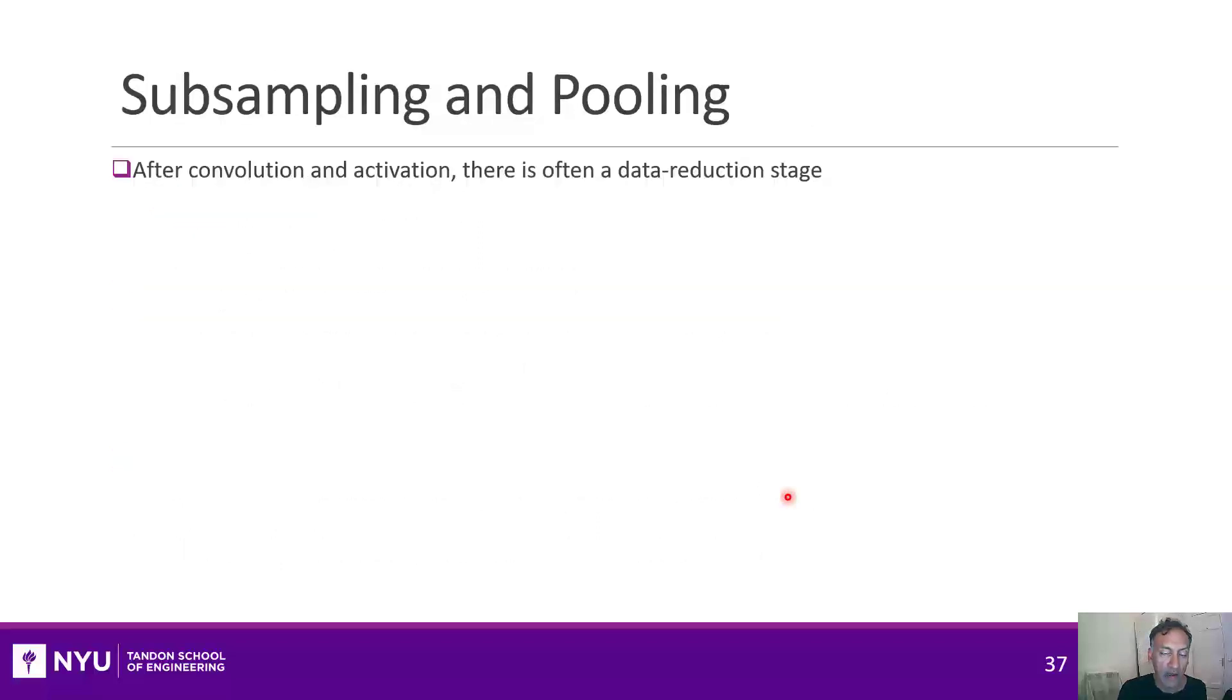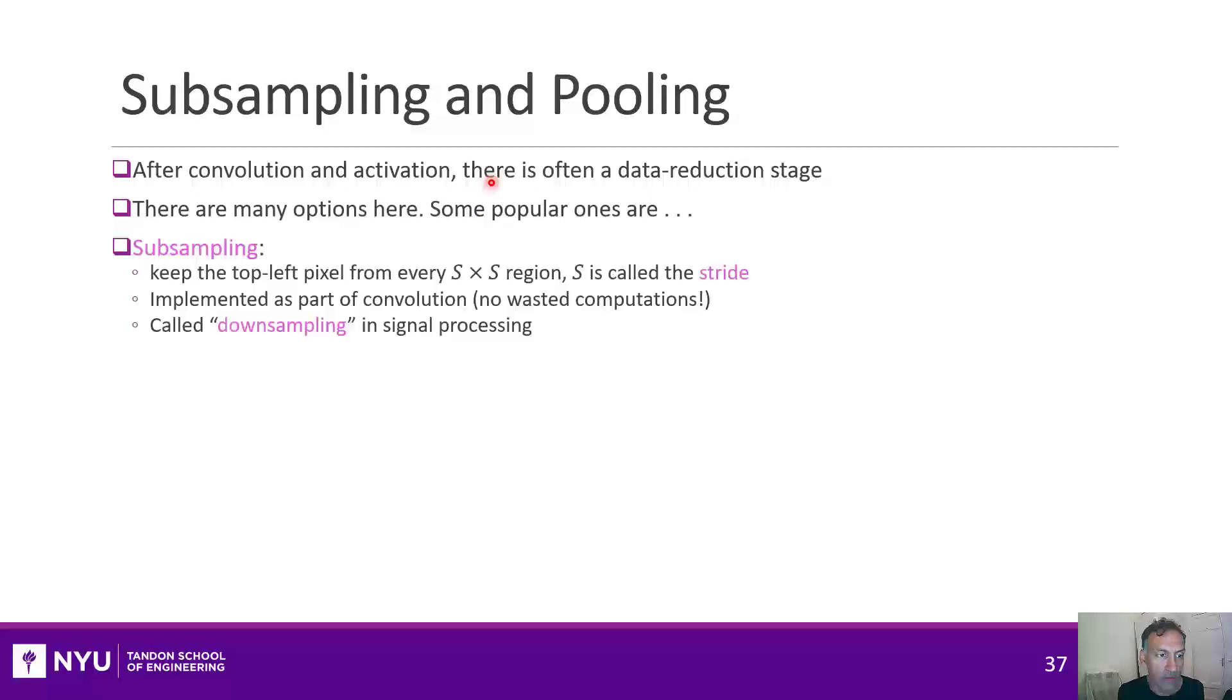Now, after you do the convolutions, you usually follow some kind of data reduction stage before going to the next layer. And there are several ways to do that data reduction. The first way is just called subsampling. And what you do in subsampling is you take each region, say, S by S, and you pick out one element. And you just ignore all the other elements. And S is called the stride. In signal processing, you will know this as downsampling.